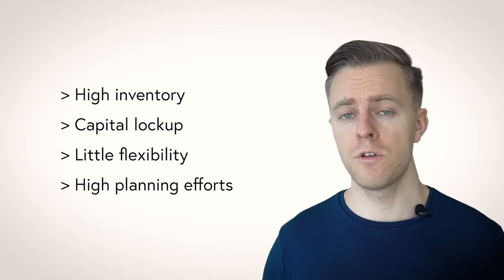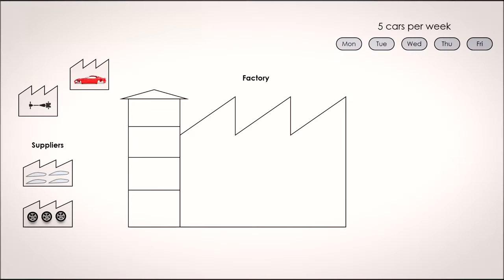Now what is the deal with pull production? It is the same initial situation. We have a factory, want to produce five cars a week, have an internal supply of car bodies, engines and transmissions. And we get the wheels and windows from our suppliers. But what's different now is the structure of our material flow. We have less inventory, but we use Kanban cards. Here's how that works.